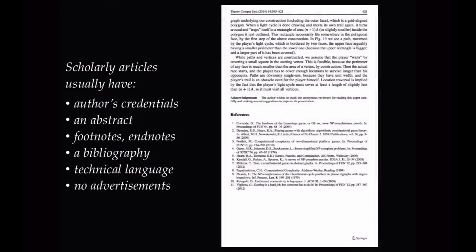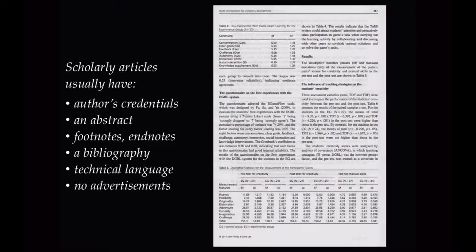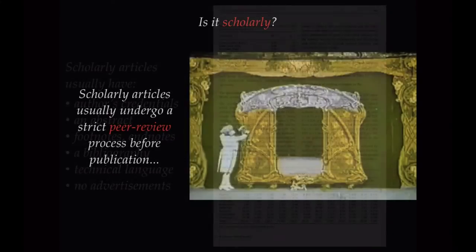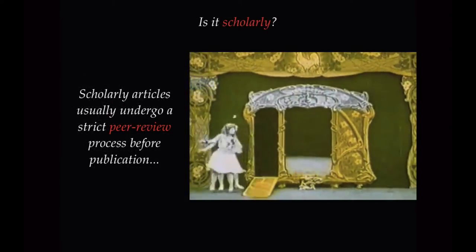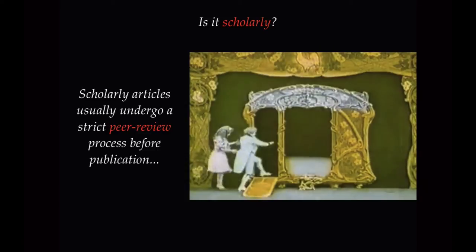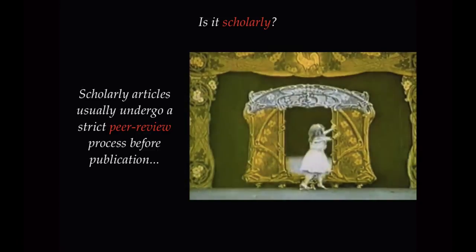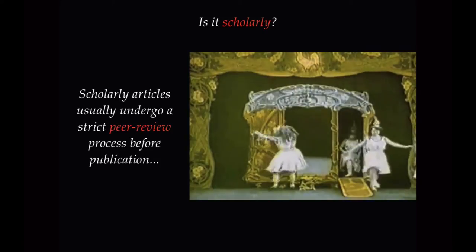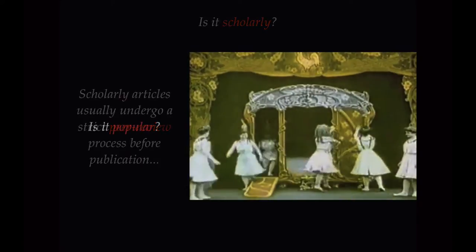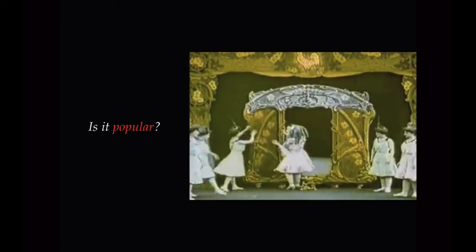Scholarly articles are also distinguished by their use of technical language. Such articles are usually written to inform or challenge other scholars. Typically, graphs, charts, or illustrations are the only images found in a scholarly article. They very rarely contain advertisements. One further feature is the peer review process — many scholarly articles undergo a strict review by peers before they ever make it to publication.